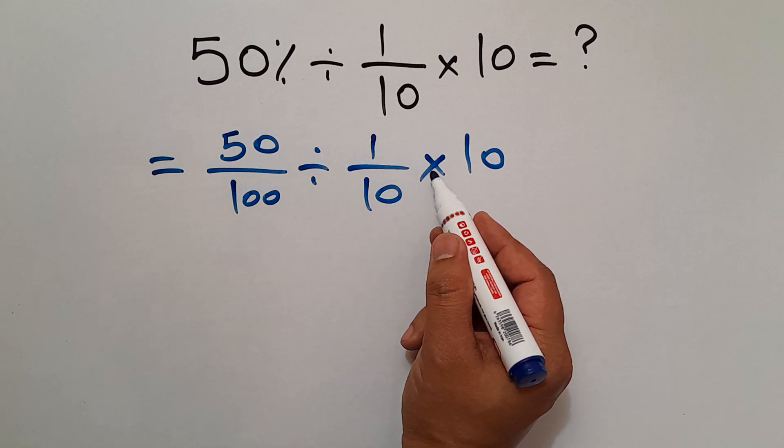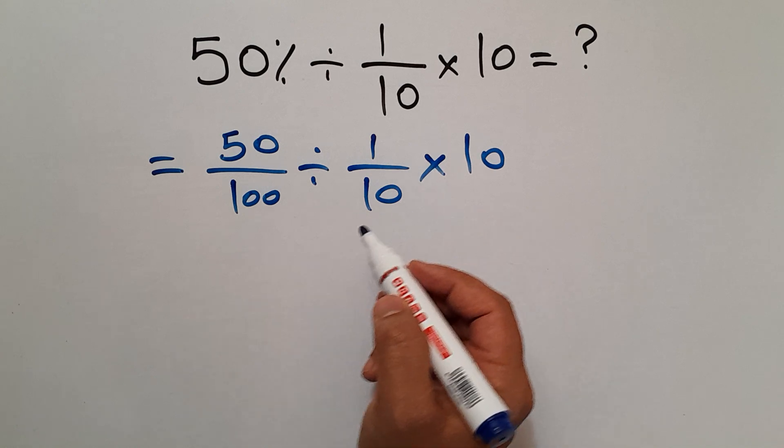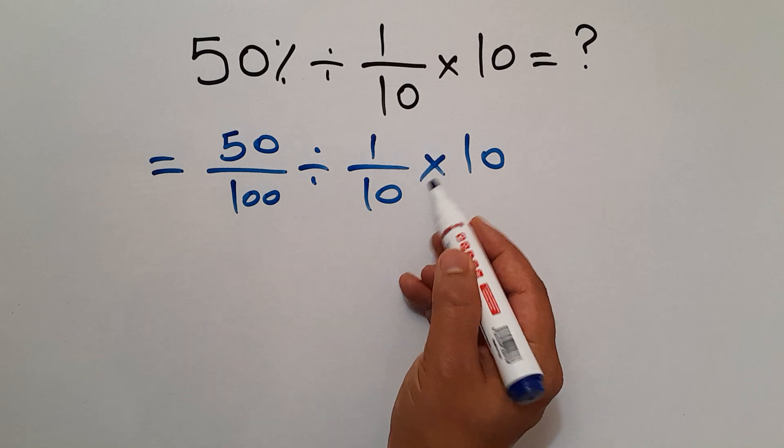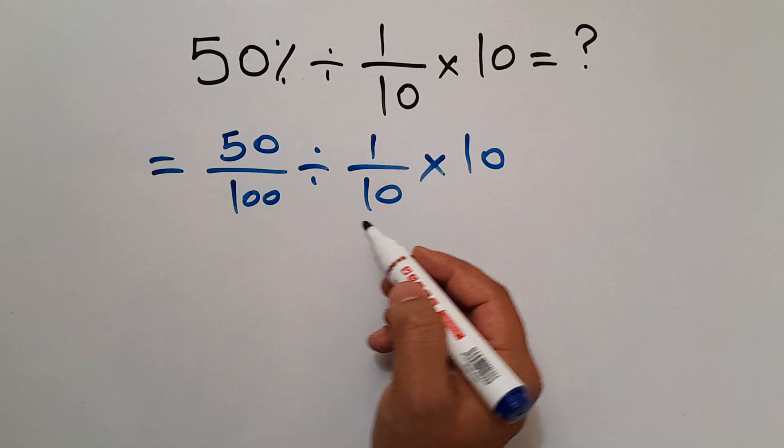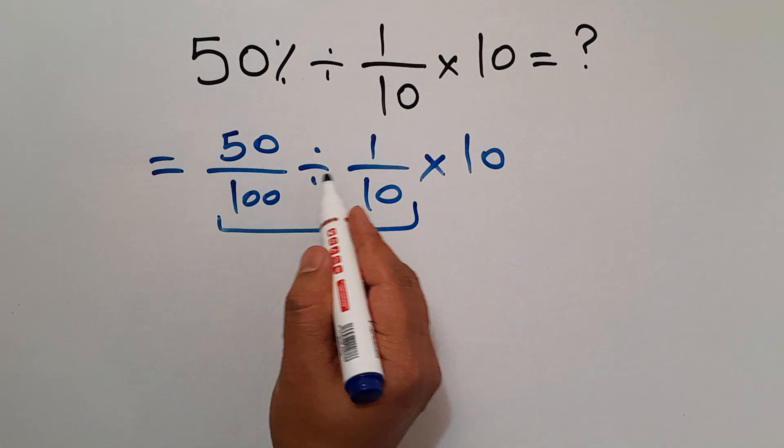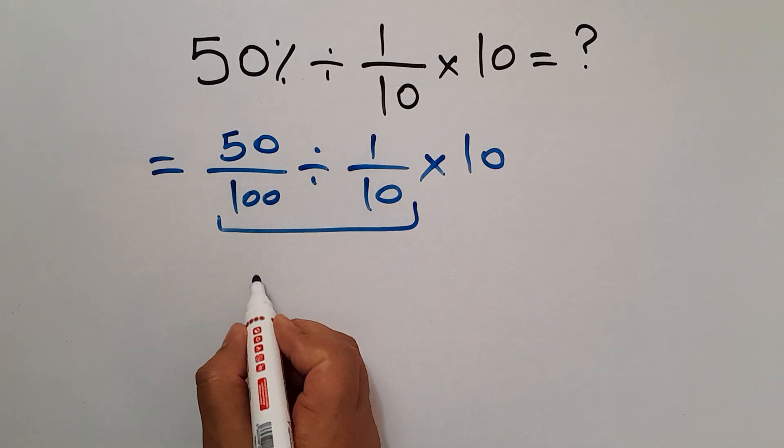As we know, division and multiplication have equal priority and we have to work from left to right. So first this division, and then this multiplication. According to the KCF rule, 50 over 100 divided by 1 over 10 can be written